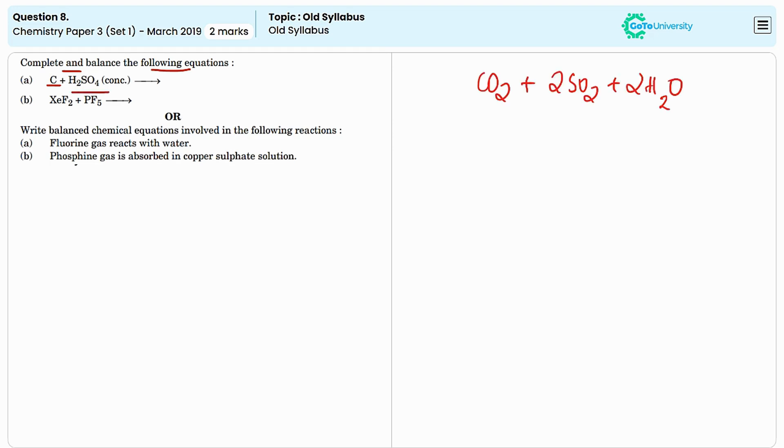The products are carbon dioxide, sulfur dioxide, and water. To balance the equation, we need to put 2 before SO2 and 2 before H2O.